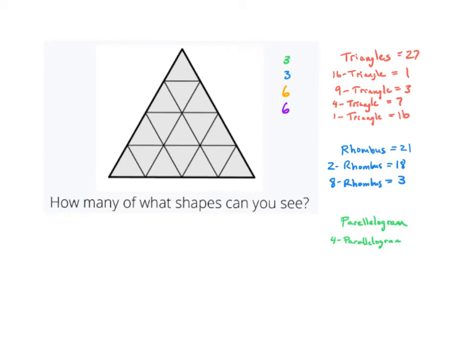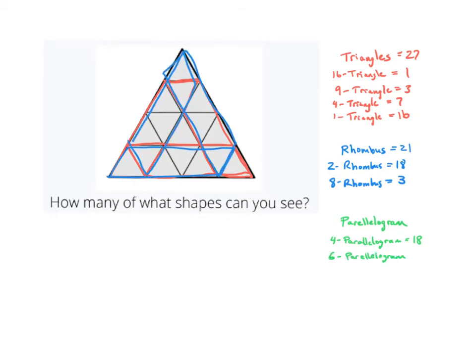For the four-parallelograms there are three plus three plus six plus six, which would be eighteen of them. We also have larger parallelograms — for example right here, there's one right there and one right here. Including the opposite directions, of the six-parallelograms we have a total of six of them.